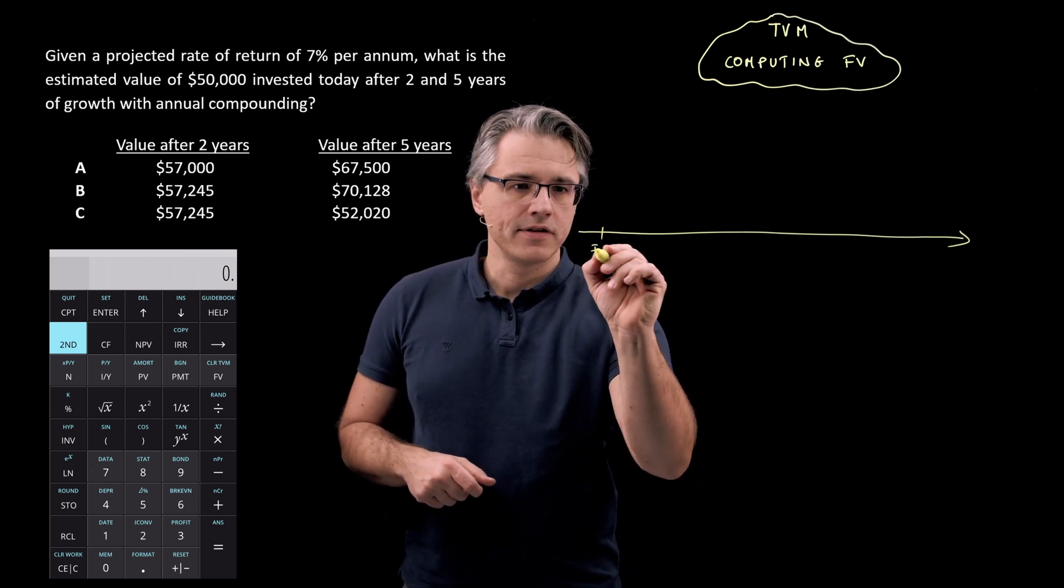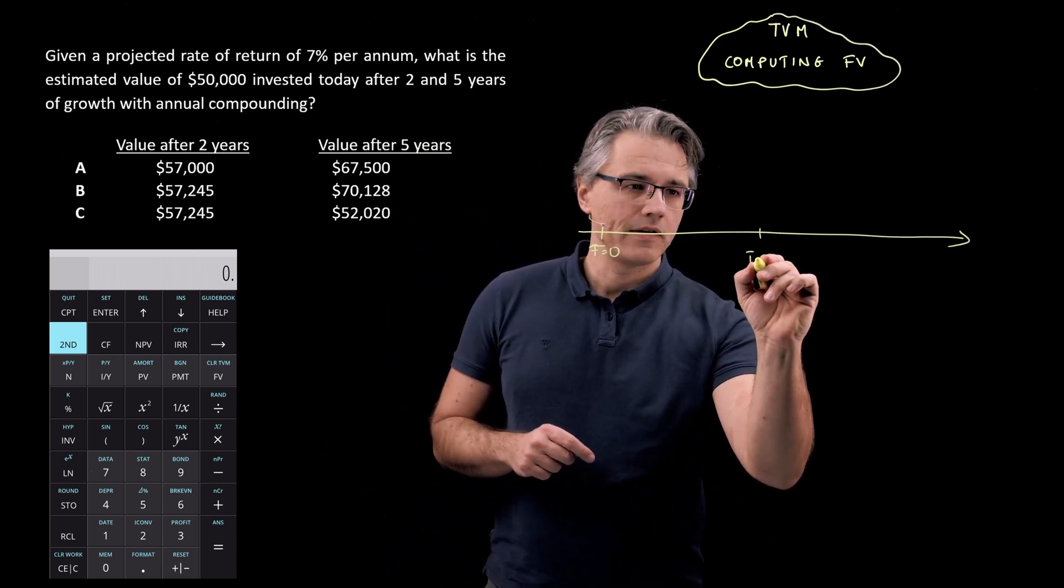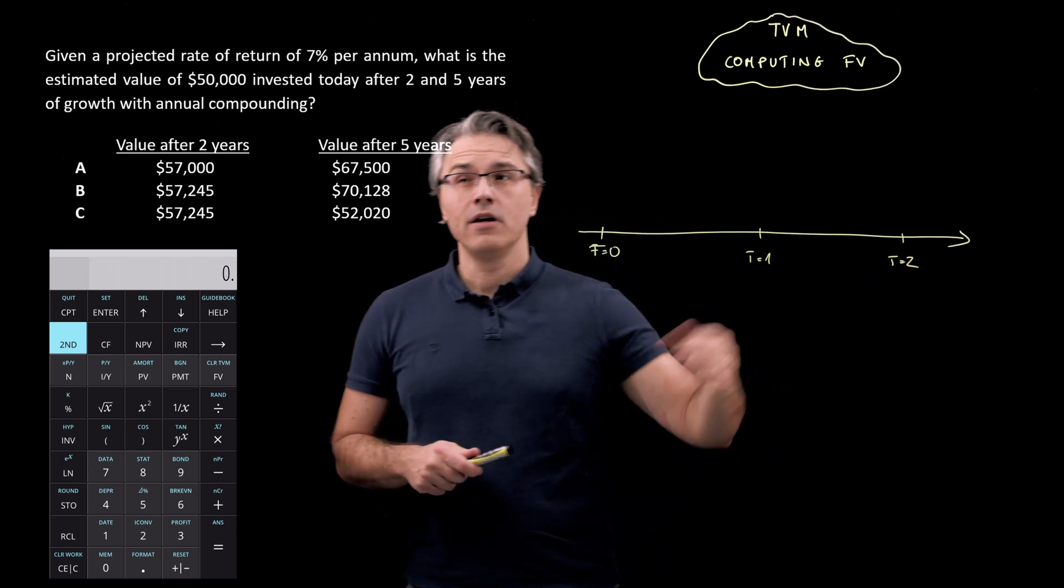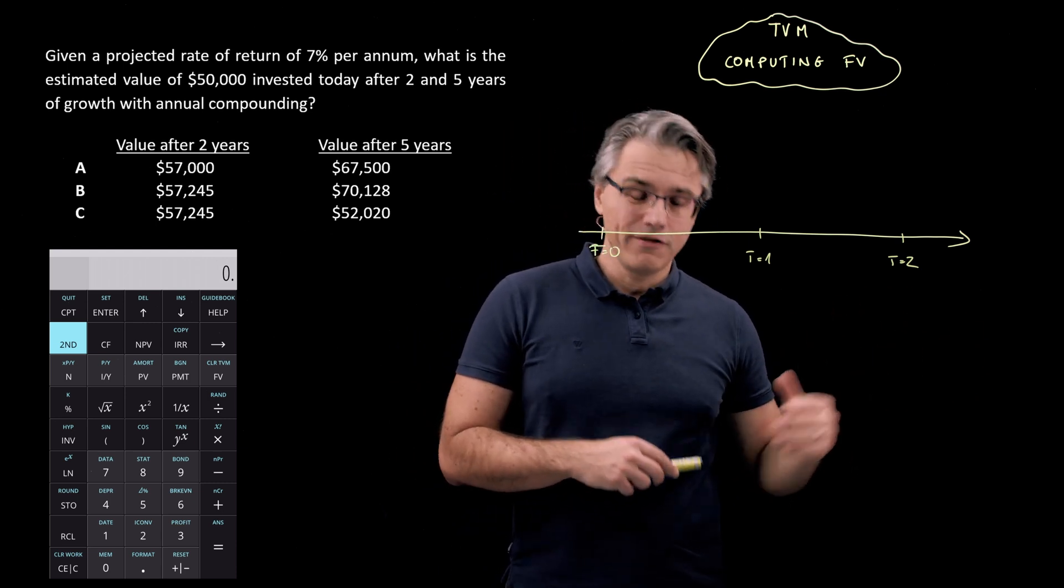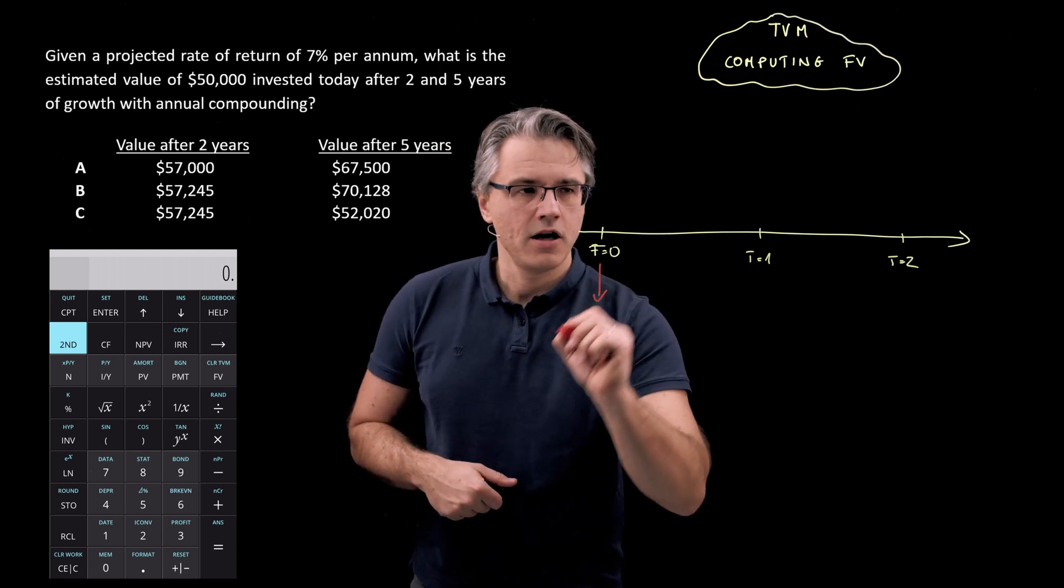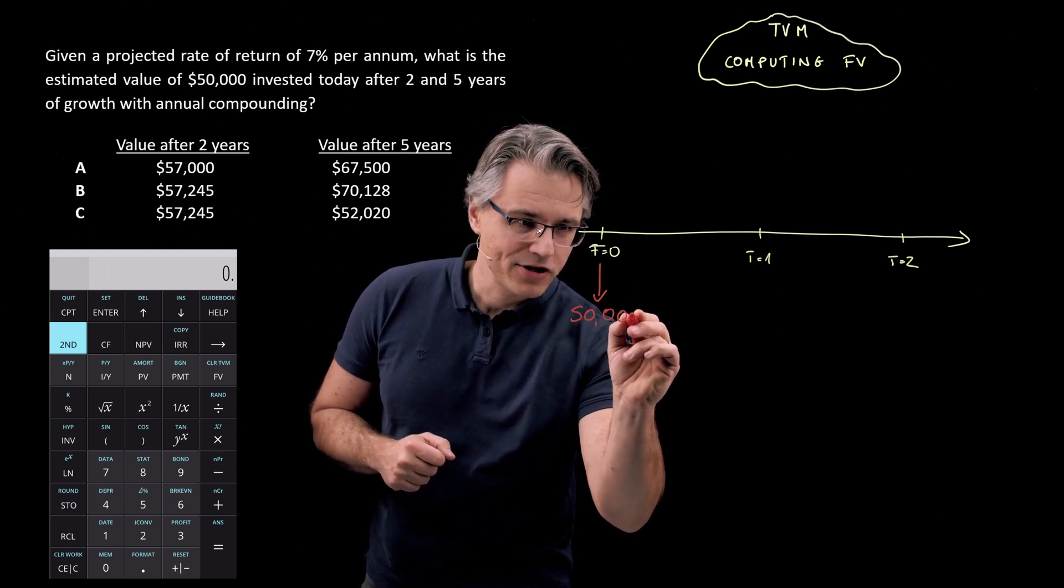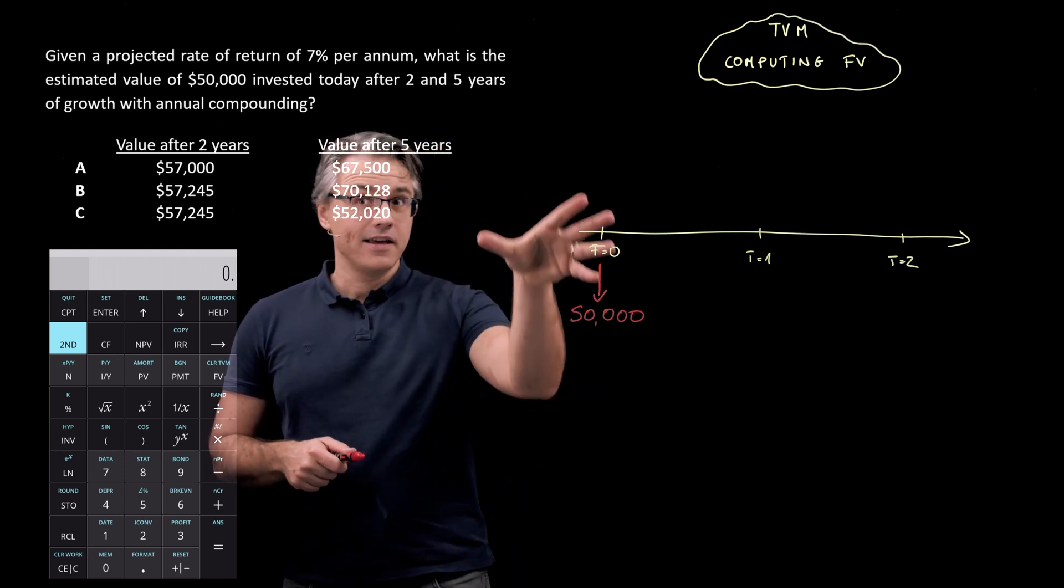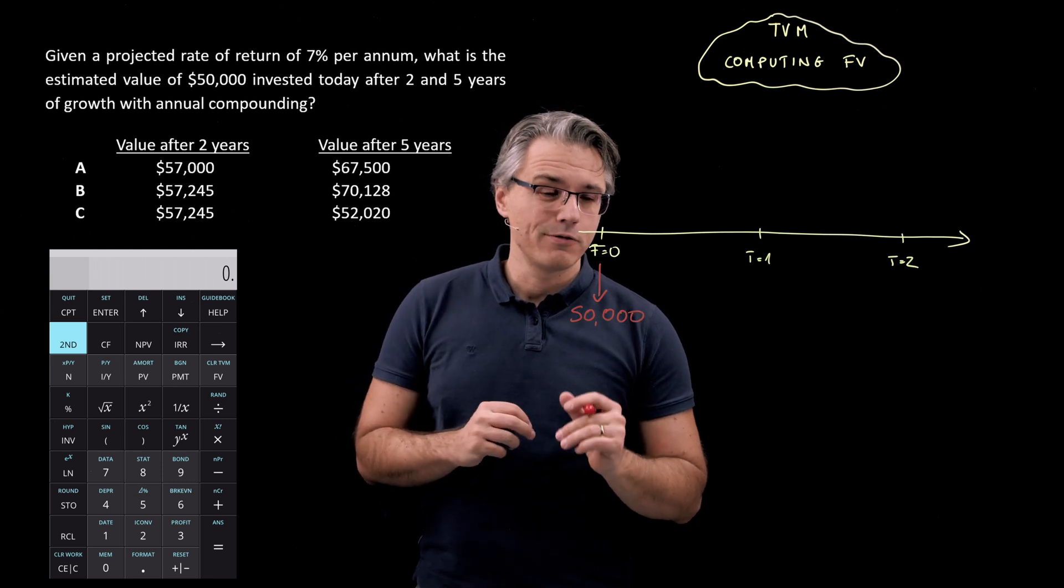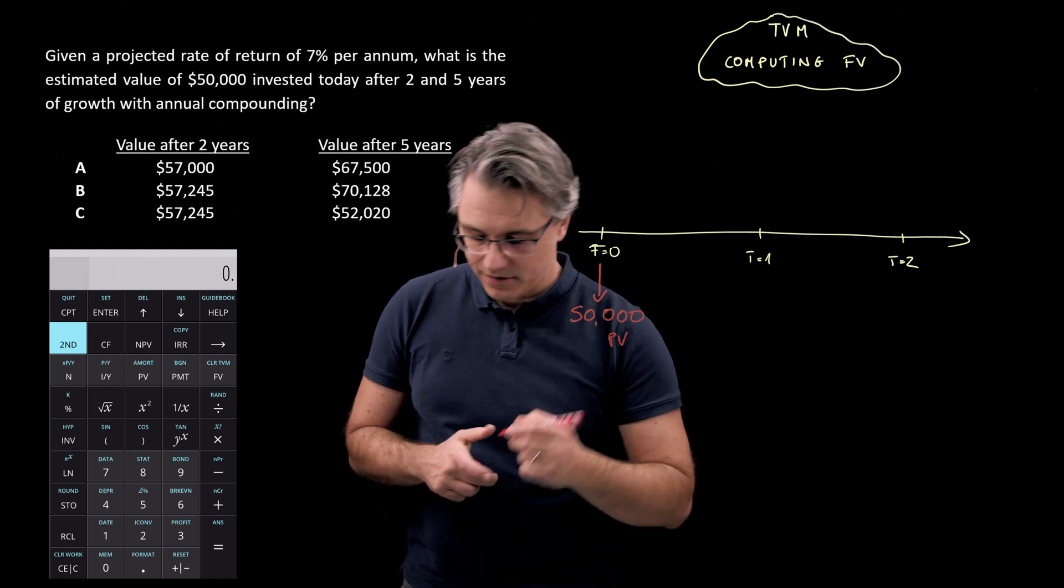And on this timeline, I'm going to draw T0, that's the point of the initial investment, so time zero. I'm also going to have T1 over here and T2, that's the end of year two. I could theoretically have the end of year three, four and five as well. However, I'm not going to do that. Over here, I'm drawing a downward pointing arrow. And the downward direction is supposed to signify a cash outflow, a cash outflow of 50,000.